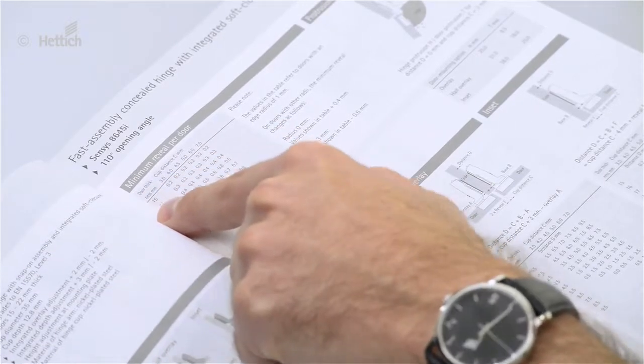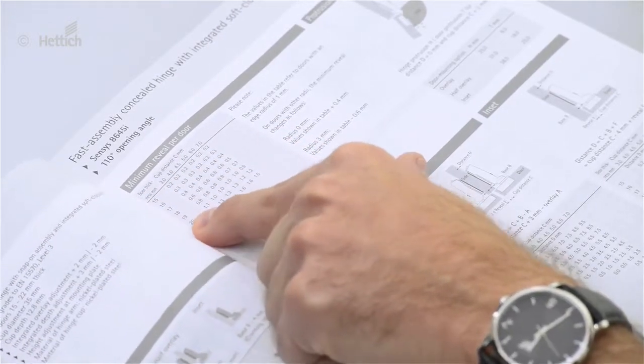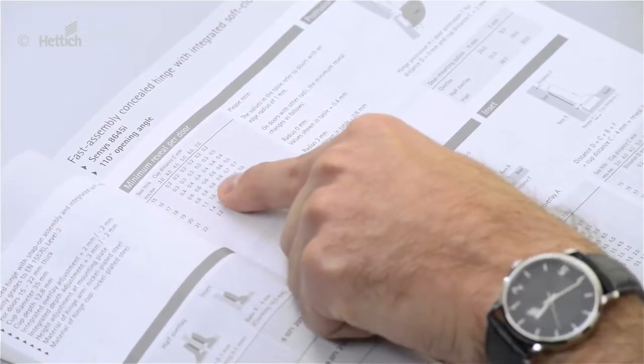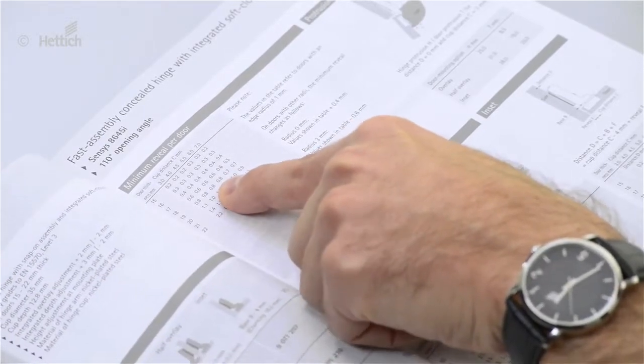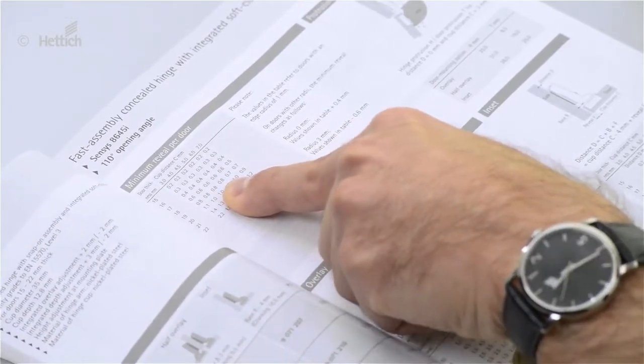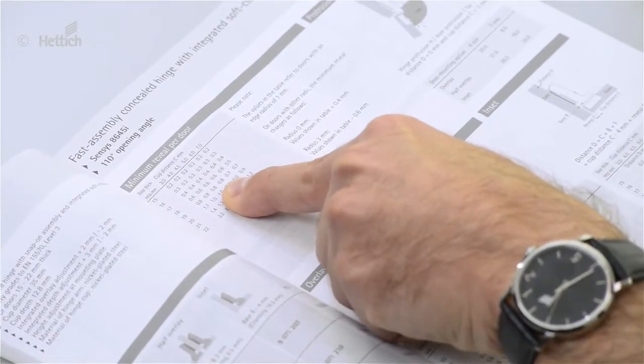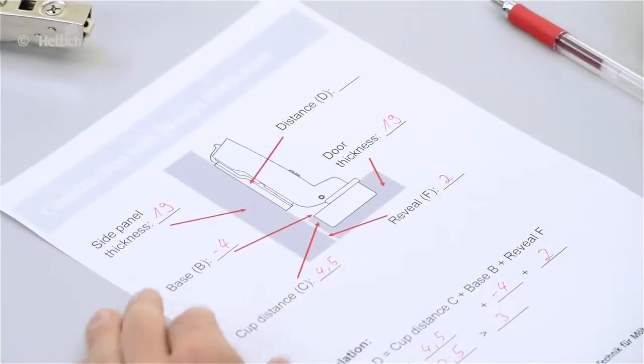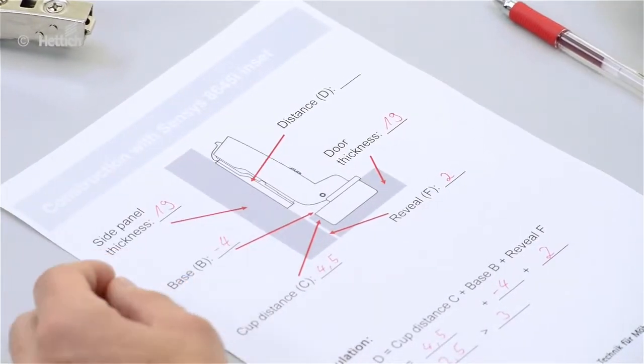So the door thickness in the example was given with 19mm, and the cup distance C with 4.5mm. So that's the minimum reveal of 0.8mm. And in the example we had 2mm, so the application can be realized.